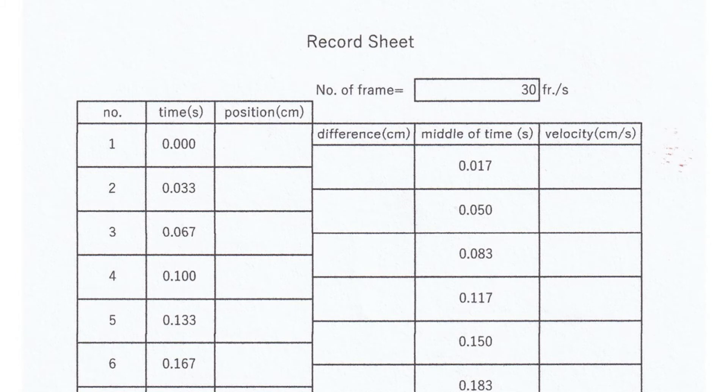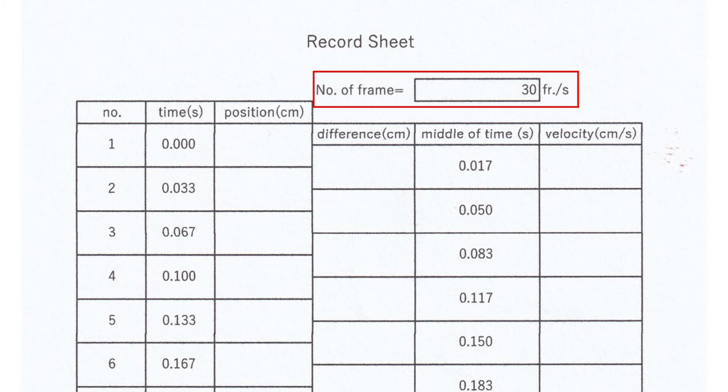This is the sheet for recording reads. Check the number of frames per second of your smartphone video. Generally, it's 30 or 60 frames. The number of frames per second of this video is 30. So, the time of each frame is 1 thirtieth second.